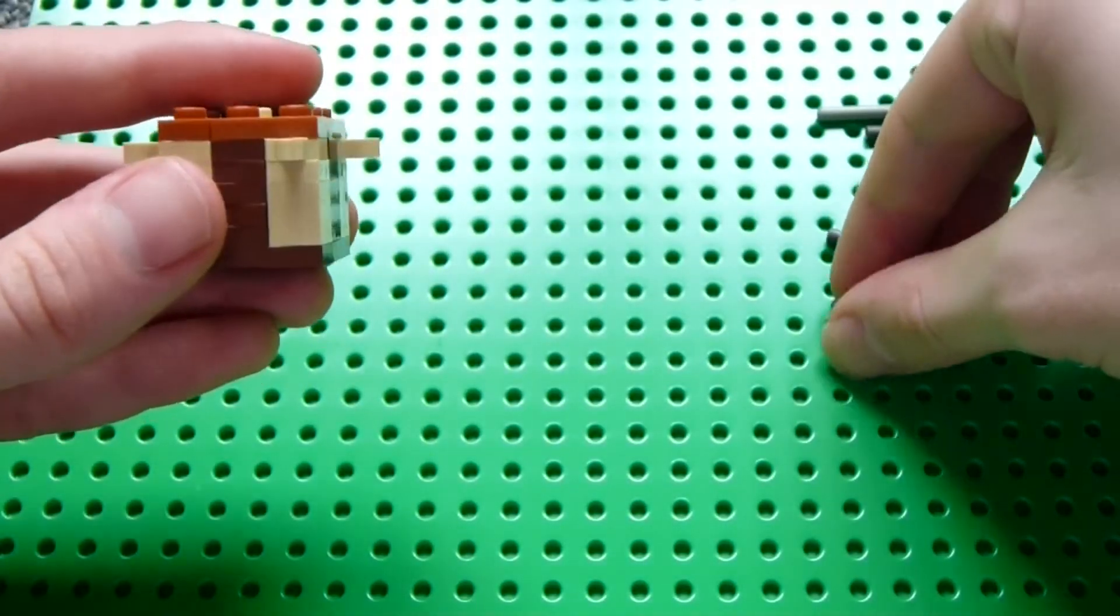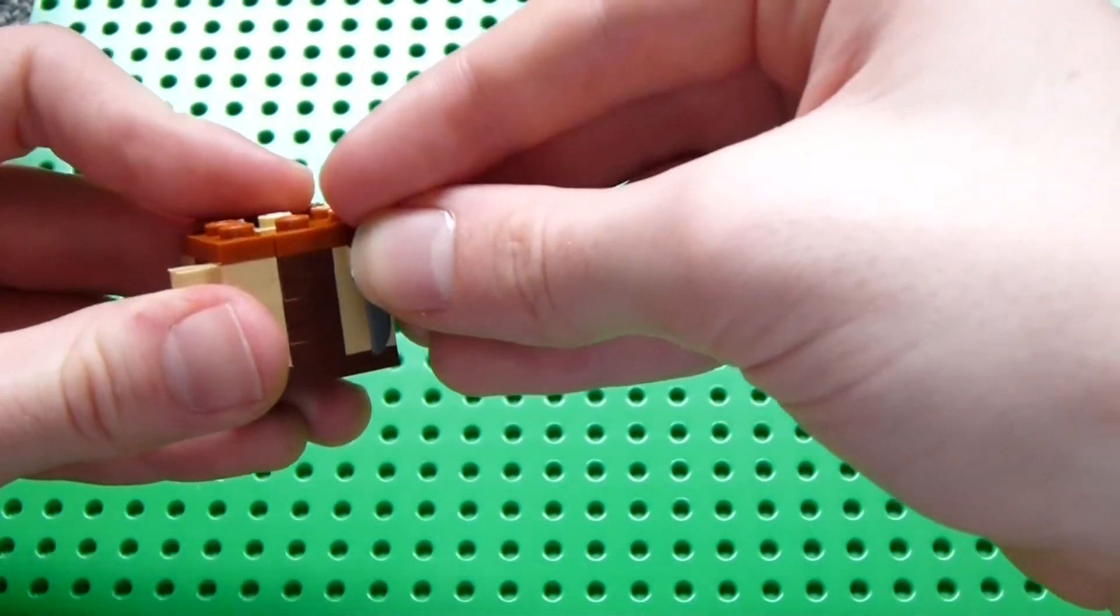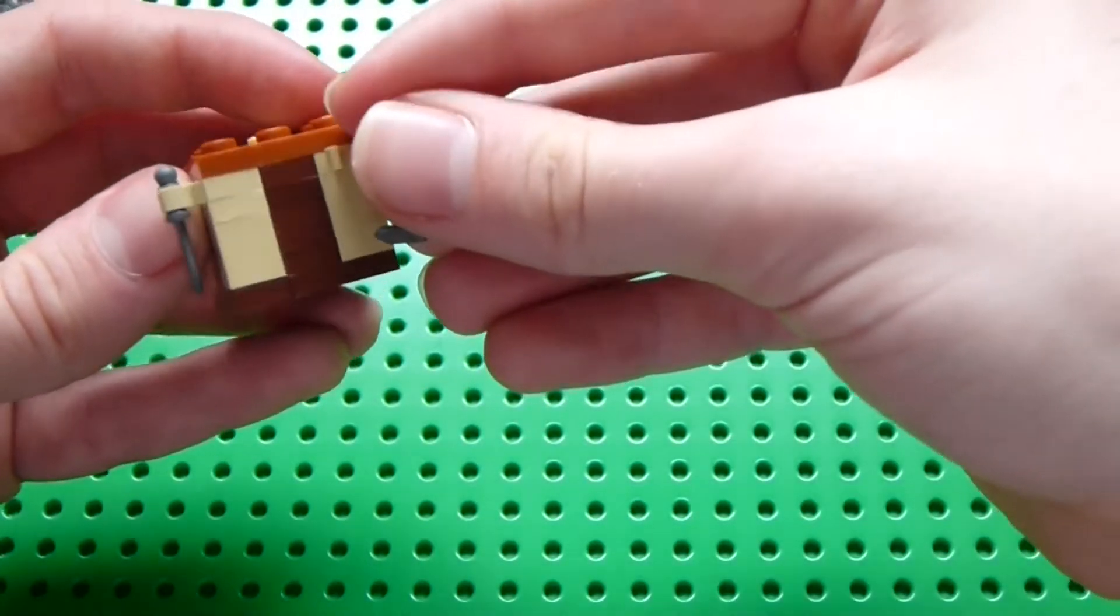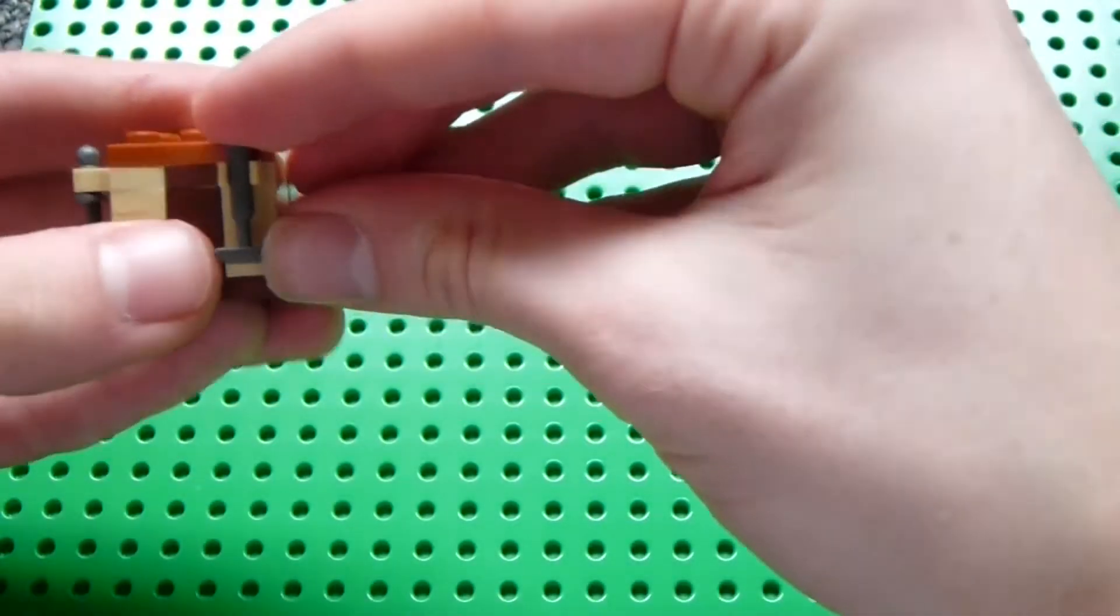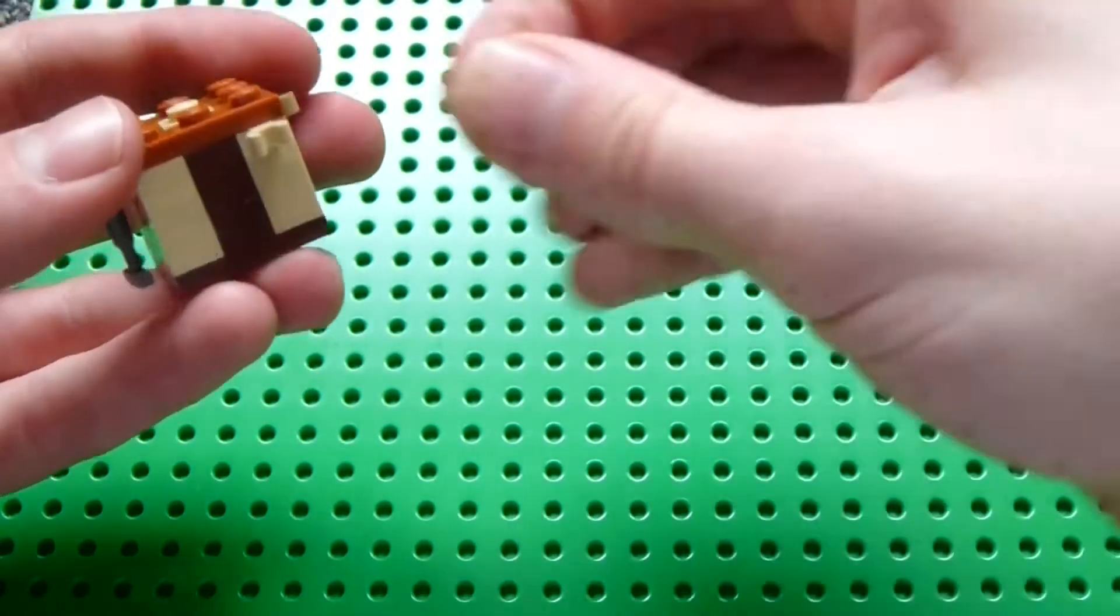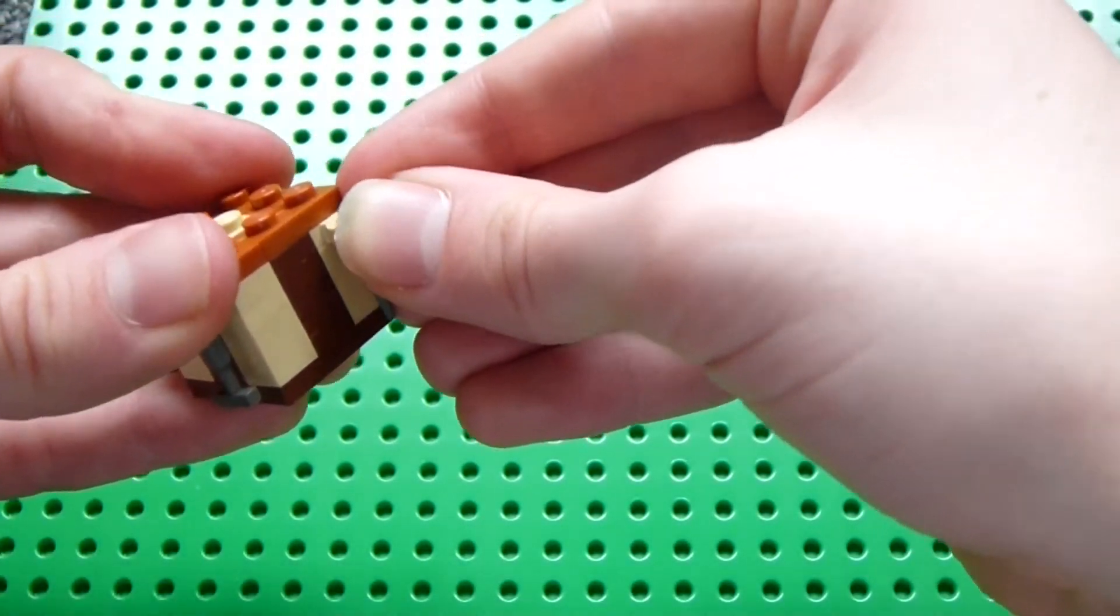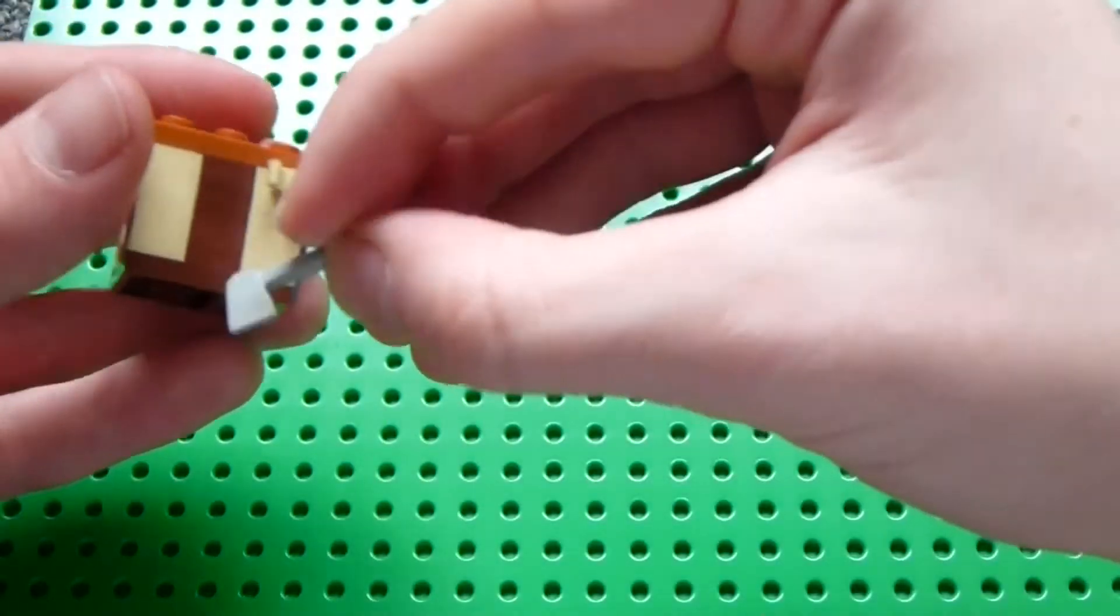And then we'll attach some tools to the sides. So on one side I placed a knife, on one side I placed a small mallet, on one side I placed a screwdriver, and on one side I placed a small axe.